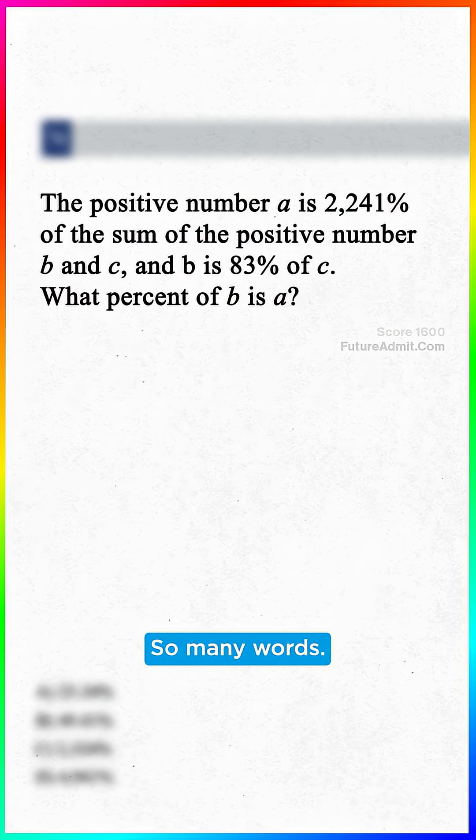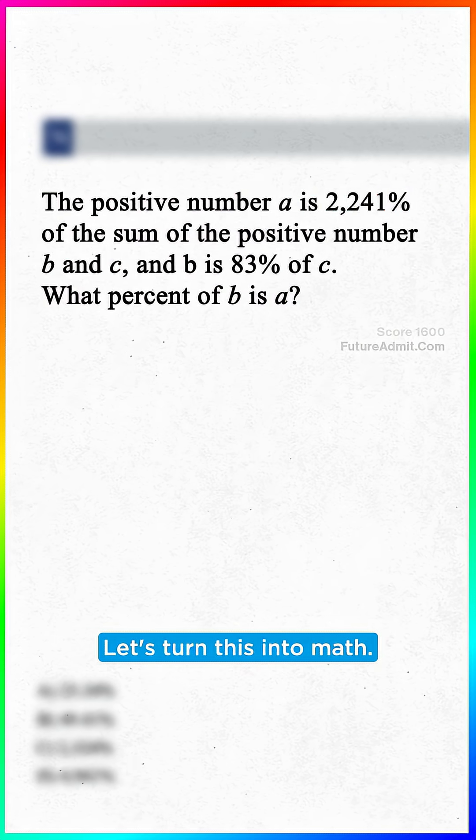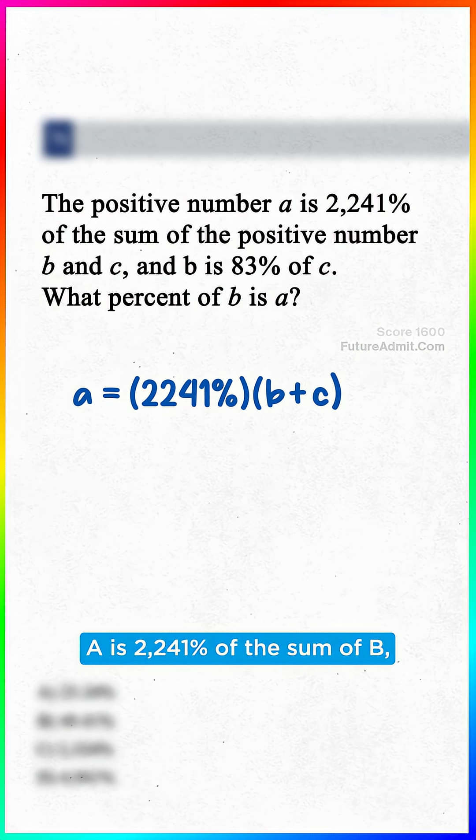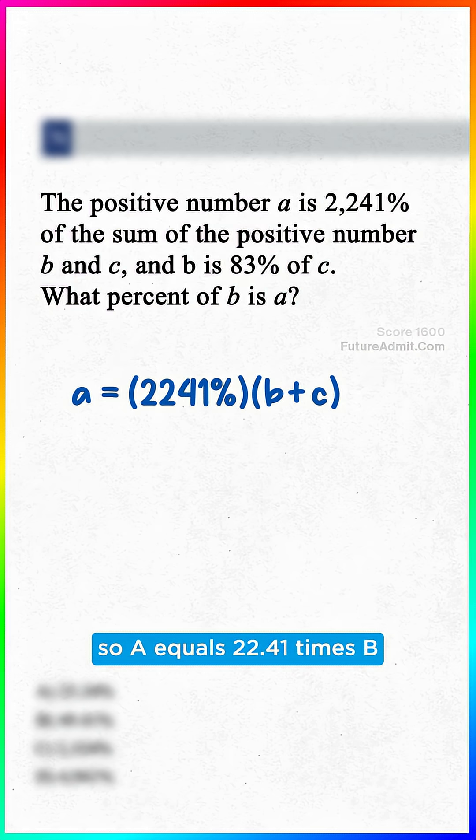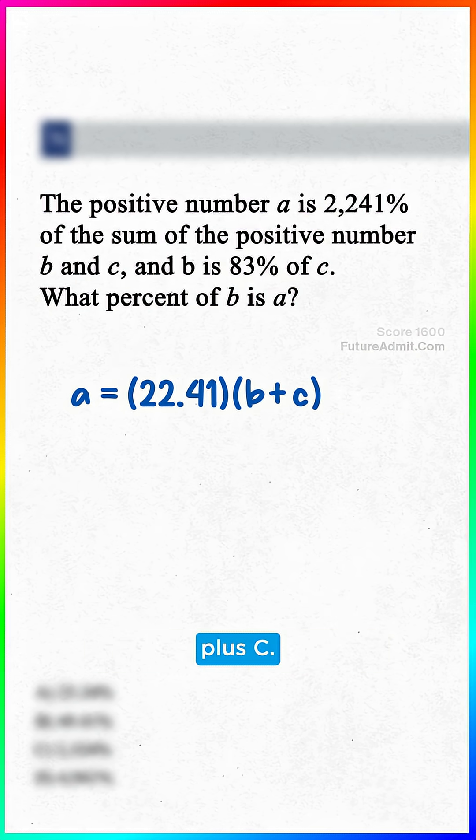God, so many words. Let's turn this into math. A is 2,241% of the sum of B and C, so A equals 22.41 times B plus C.